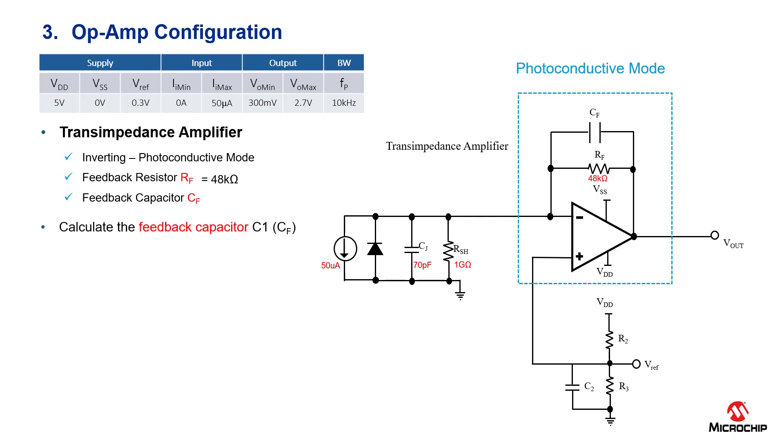Now, to calculate the feedback capacitor, we use the equation shown on the screen. Make sure to insert the values of the bandwidth goal of 10 kilohertz and the feedback resistor value of 48 kilo-ohms. We solve the equation and the feedback capacitor is calculated to be 3.3 picofarads.